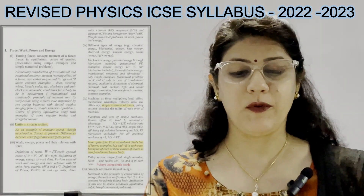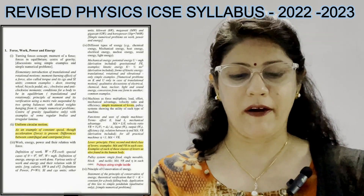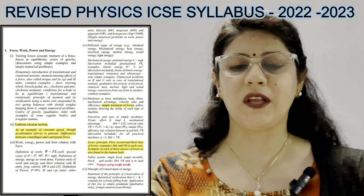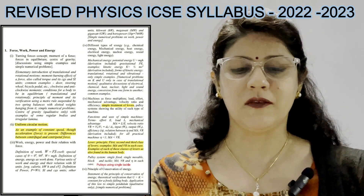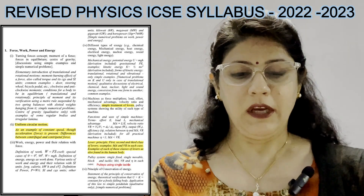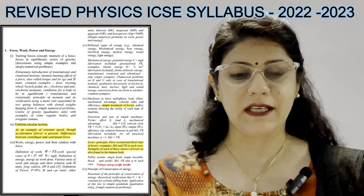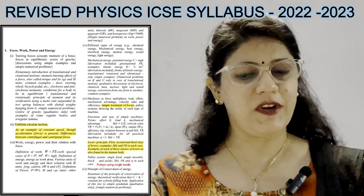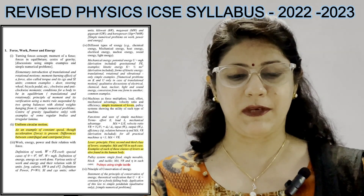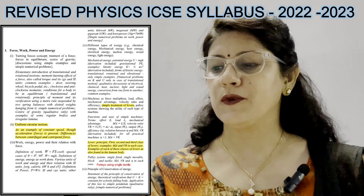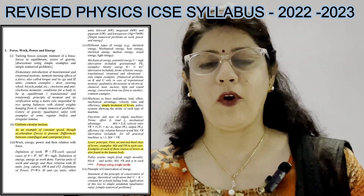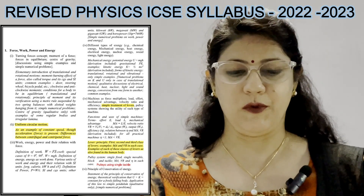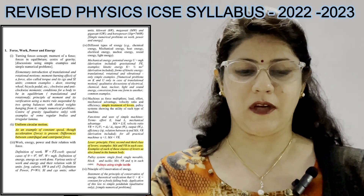Now coming to Unit 1, which is Force, Work, Power, and Energy. The only revised or reduced portion is uniform circular motion — for example, constant speed though acceleration force is present, and differences between centripetal and centrifugal force. If you are following the Concise book, this is Exercise 1C, which is reduced from this year's syllabus.